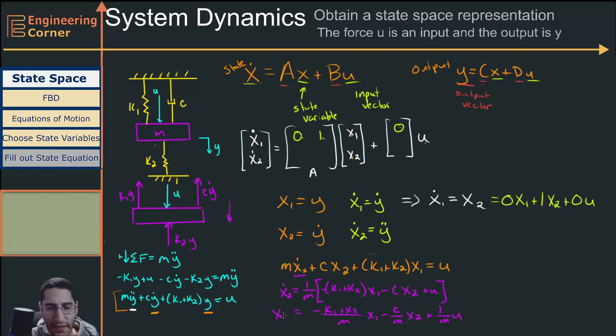And this is exactly what we had right here. So we have an equation for this part of our matrix. So now this is going to be minus k1 plus k2 over m, this is going to be minus c over m times x2, and this is going to be 1 over m times u.